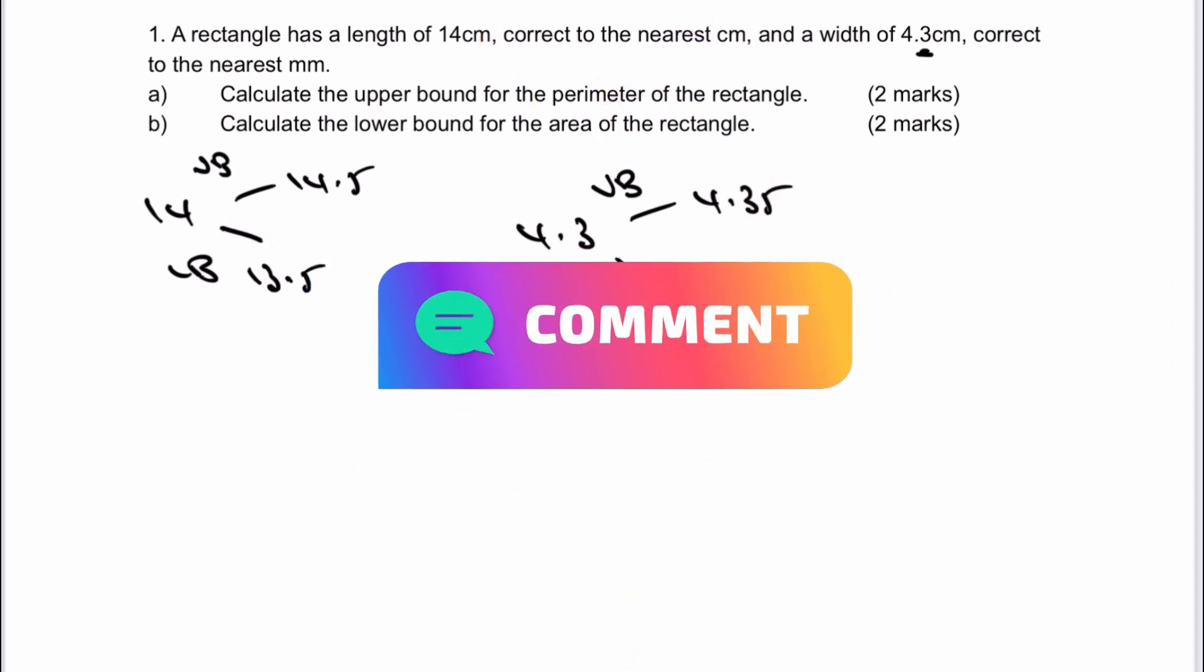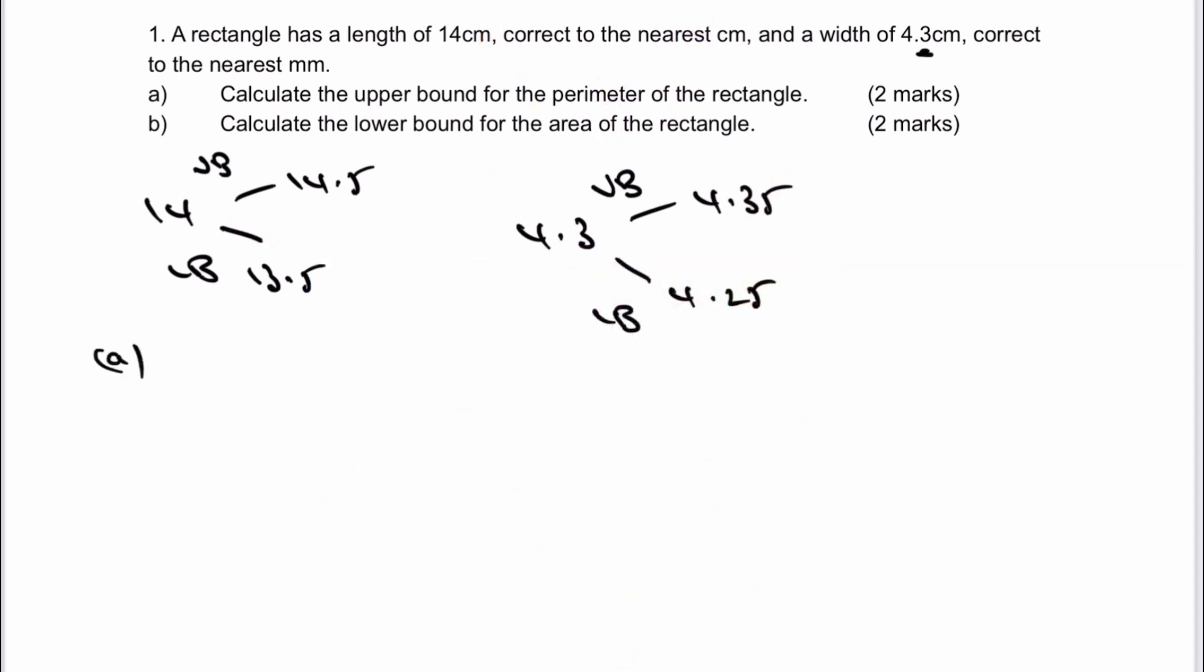So we've got the information that we need, and the first thing is calculate the upper bound for the perimeter of the rectangle. So the perimeter means all the measurements are the largest measurement that we can achieve. So that's going to be 14.5, 4.35, 14.5, and again 4.35. And when we calculate all of that, and we add them all up together, we're going to get 37.7 centimeters, which would be the upper bound for the perimeter.